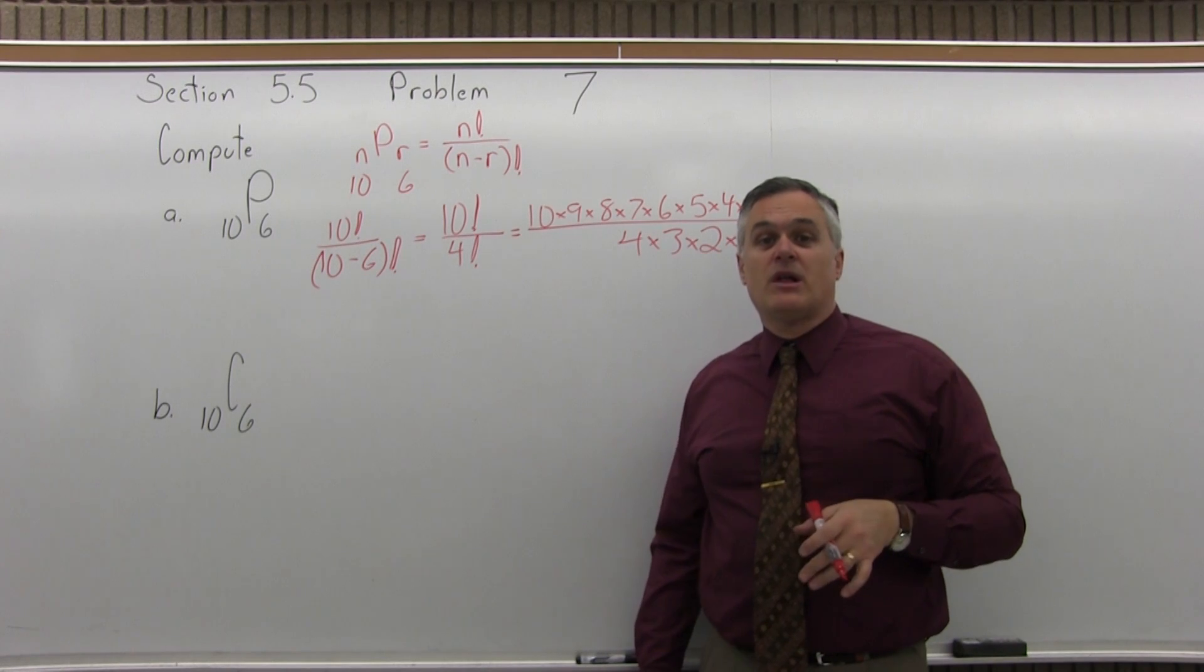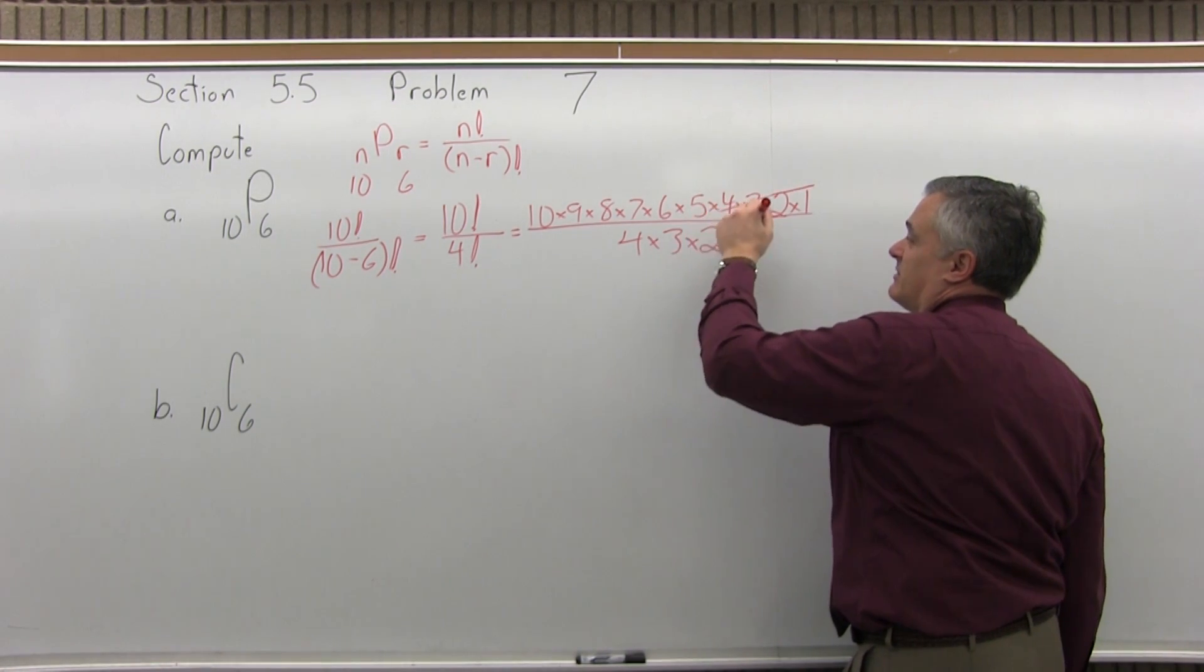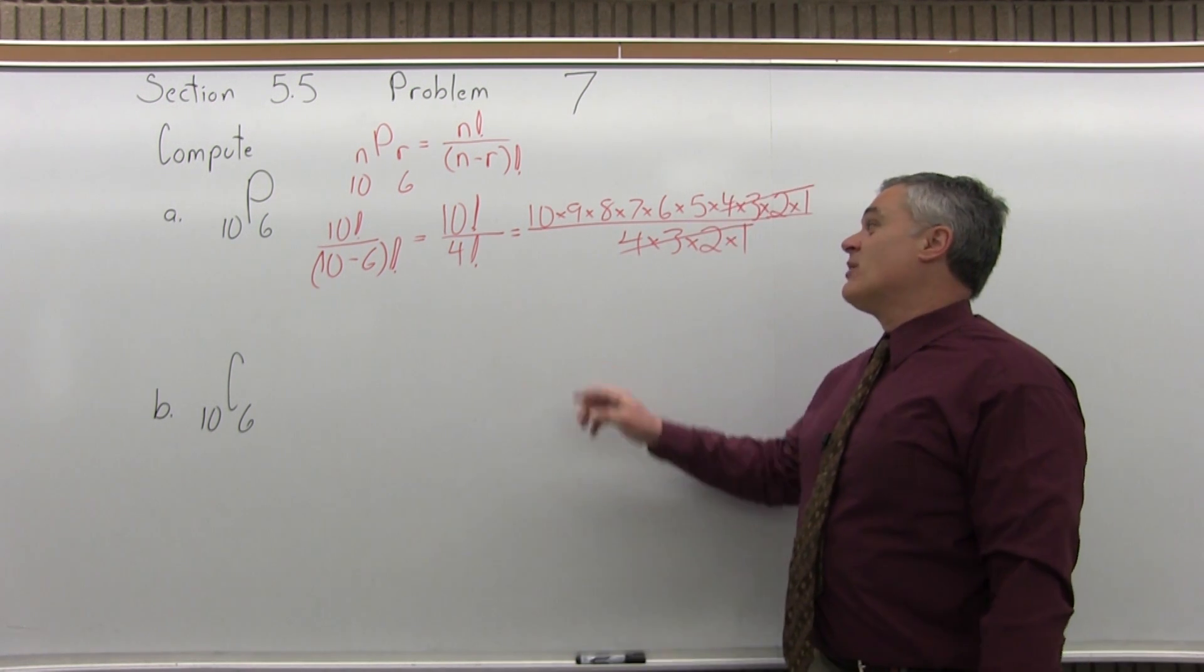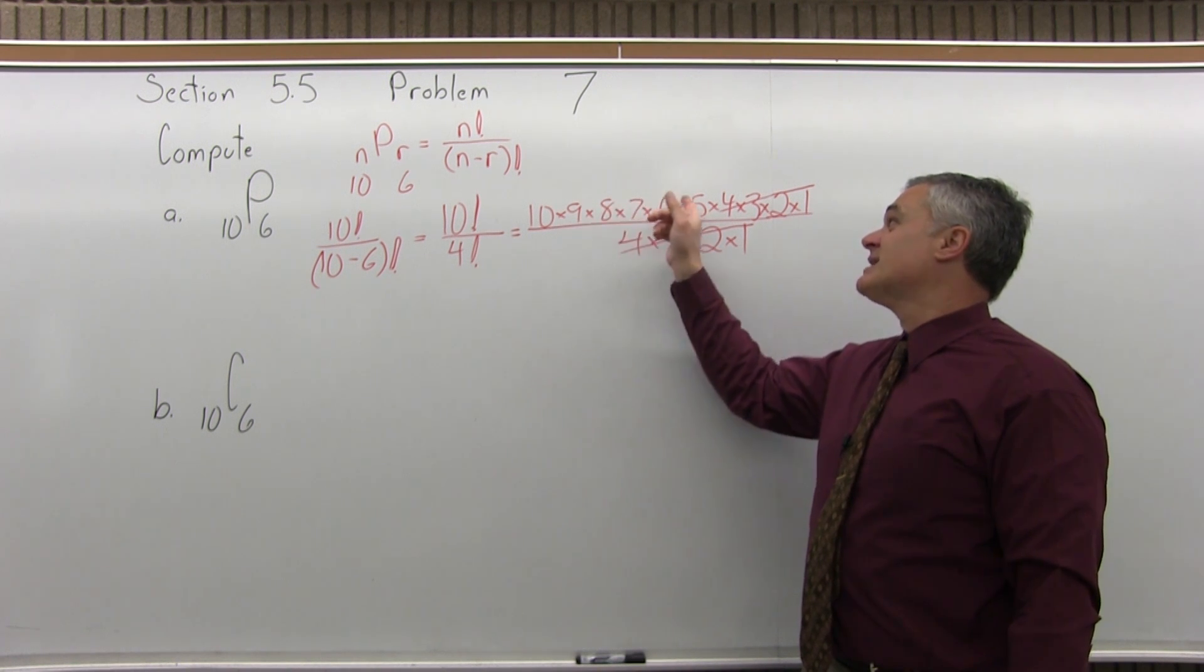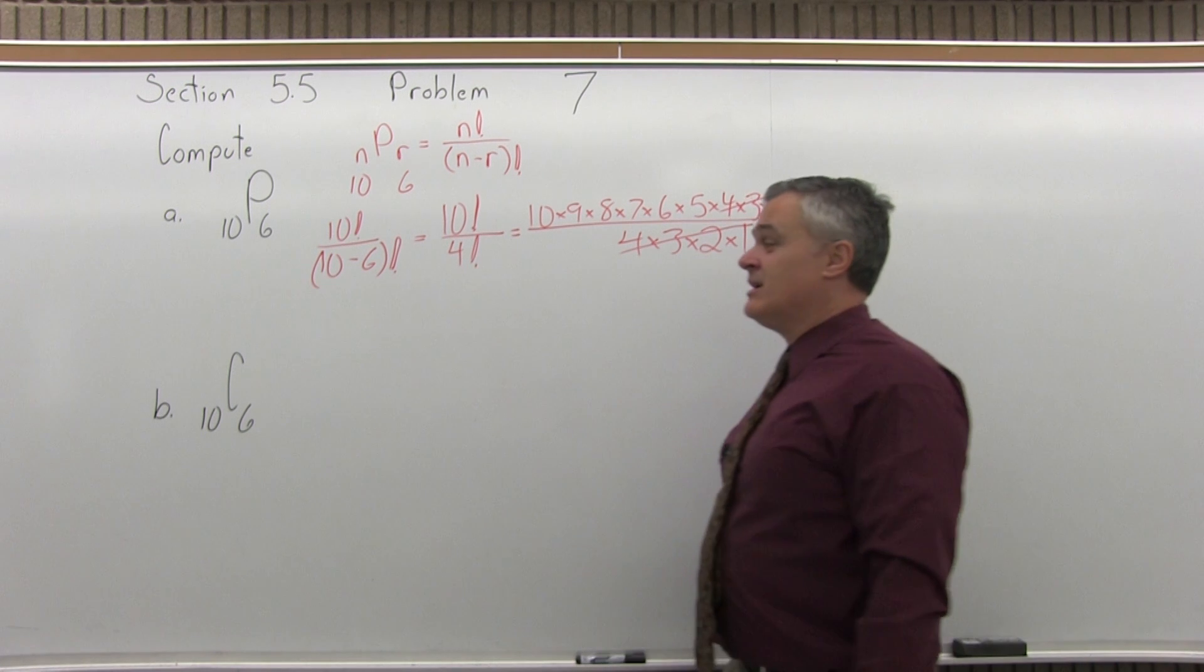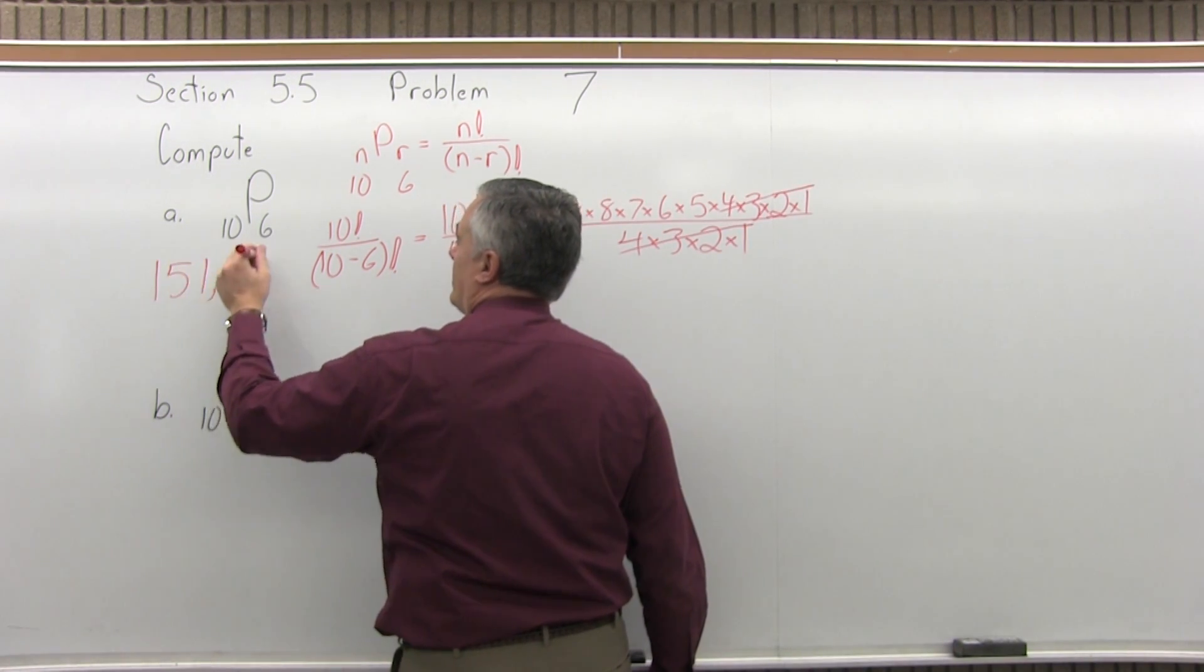And you can multiply it all out and reduce it, or you can cancel first. 4 times 3 times 2 times 1 shows up in both the numerator and the denominator, so let's just cancel it. So now what you have to do is multiply 10 times 9 times 8 times 7 times 6 times 5, and that's the answer. It's a pretty big answer. If you multiply that out, it comes out to 151,200.